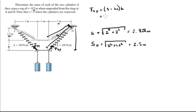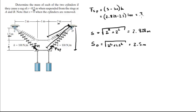When we plug the numbers in, we get (2.828 minus 2.5) times K, with K being 100 N per meter. So the force developed in the spring is approximately 32.8 N.